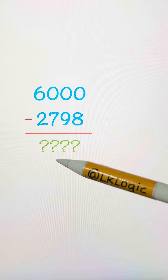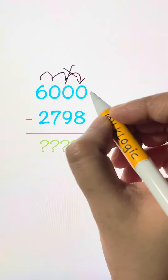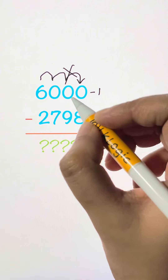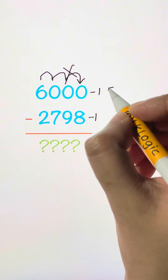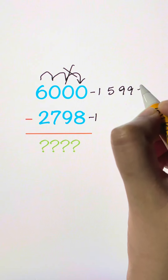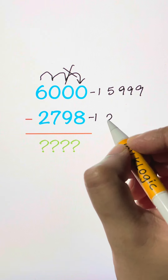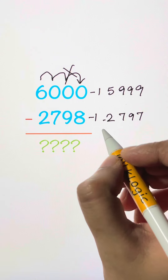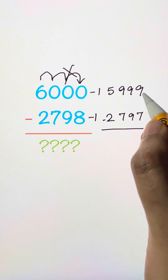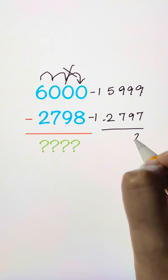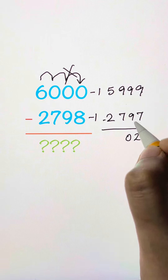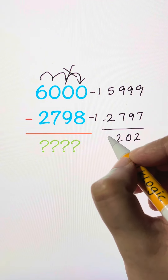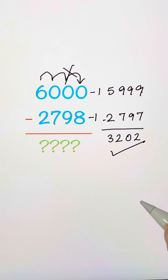How to subtract without borrowing? All you have to do is subtract one from these two numbers. You'll get 5,999 and 2,797. Now subtract: 9 minus 7 is 2, 9 minus 9 is 0, 9 minus 7 is 2, 5 minus 2 is 3. That's your answer.